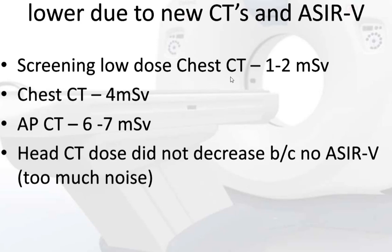Screening low-dose chest CT is a very low dose — 1 to 2 mSv. Our regular chest CT is about 4 mSv. Abdomen and pelvic CT is about 6 to 7 mSv. Head CT dose did not significantly decrease between old and new scanners because neuroradiologists may not use the same dose modulation algorithms as in chest and body imaging.